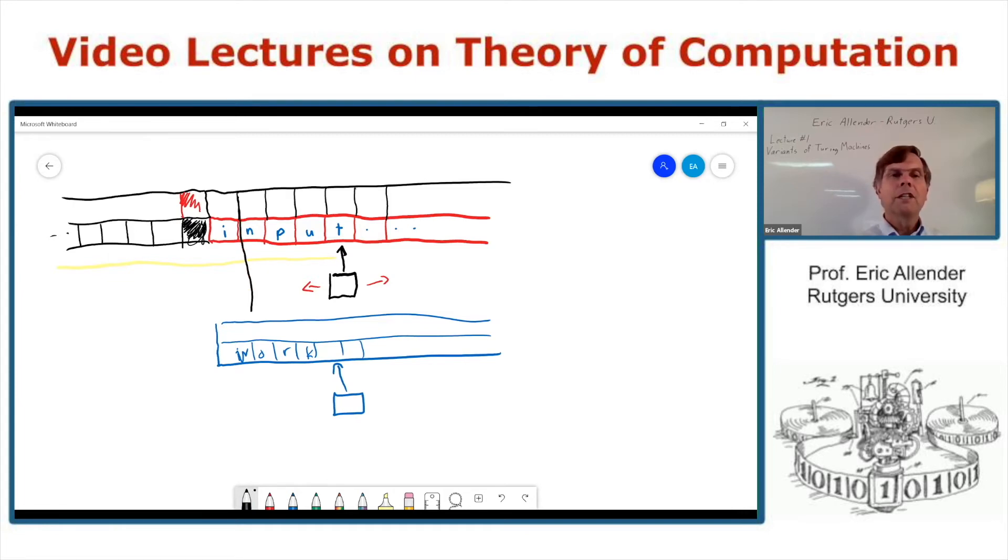So put all of this sort of on just one fat tape, and these heads can move around and read both of them and will also mark certain cells as being the ones that are currently being scanned. And in order to simulate a single step of the multi-tape machine on this machine with one fat tape, what can we do?